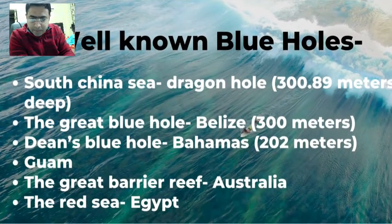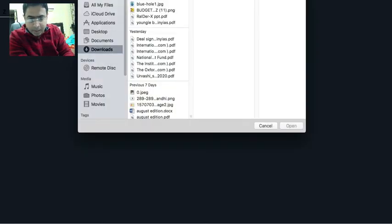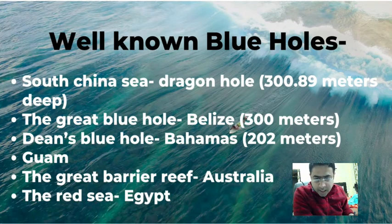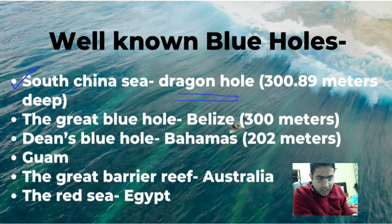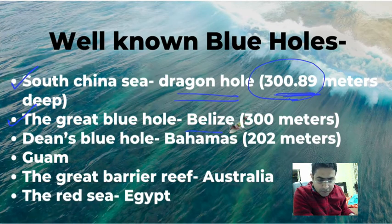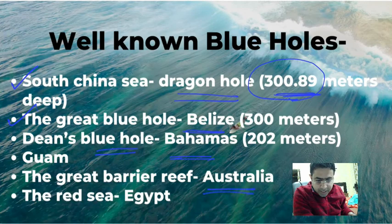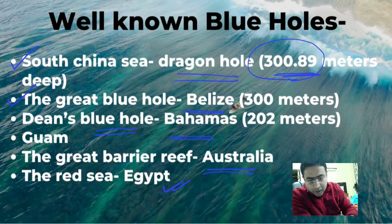Is this the only blue hole? The answer is no — blue holes are found in many places around the world. Let me tell you the prominent ones: in the South China Sea there is one called Dragon Hole, which is 300 meters deep, so the environment there changes significantly. Then there is the Great Blue Hole in Belize, which we are currently discussing. Dean's Blue Hole is in the Bahamas. There are blue holes near Australia and near the Red Sea in Egypt as well. These are the important blue holes.